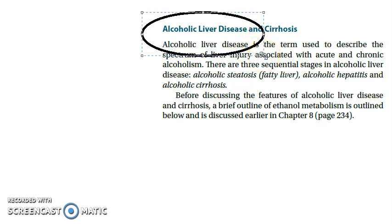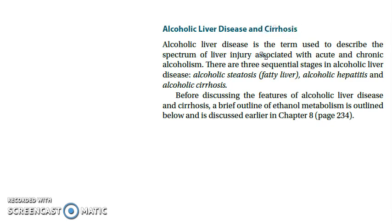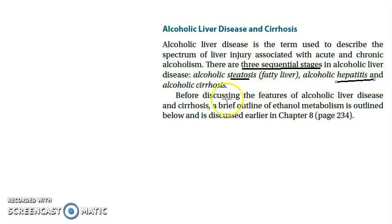Alcoholic liver disease is a type of cirrhosis. Under cirrhosis you will also get alcoholic liver disease. In alcoholic disease there are three sequential stages — that is why cirrhosis is written here. The three sequential stages in alcoholic liver disease are: alcoholic steatosis (fatty liver), hepatitis, and cirrhosis.